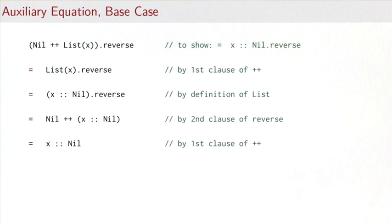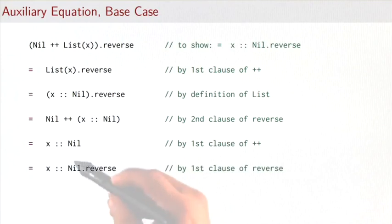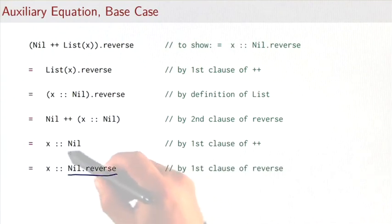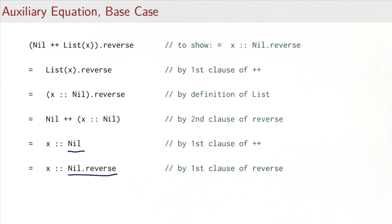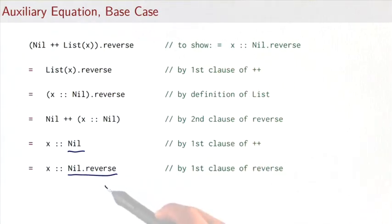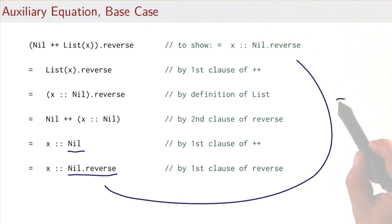We invoke the first clause of ++ to say nil is a left unit, leaving x followed by nil. Then by the first clause of reverse, nil.reverse is nil — we use this equation backwards, going from nil to nil.reverse. That gives us the right-hand side, and the base case is established.